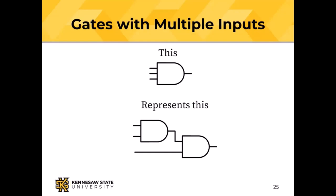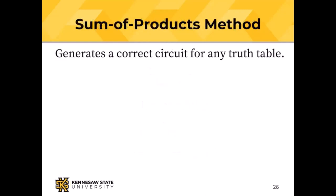I said earlier that we can build a digital logic circuit that computes any function expressible as a truth table, and I'm going to show how. You don't need to memorize how to do it, but remember the name: the sum of products method. You provide one NOT gate for each variable, an AND gate for each row where the output is 1 (these are called product terms), and then connect all AND gates to an OR gate.